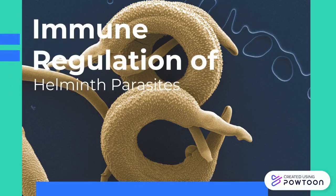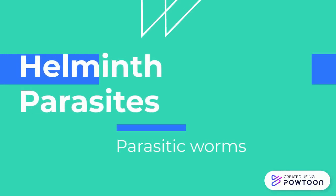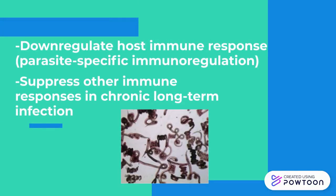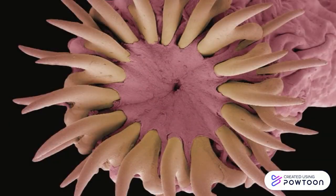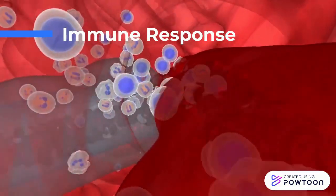How does your body combat helminth parasites? Helminths are parasitic worms that belong to a group of complex metazoans and come in many forms. They can suppress immune responses directed towards themselves and other bystander pathogens or antigens, as well as autoimmune and metabolic disorders in chronic infection. This makes these worms especially dangerous. The severity and chronicity of the infection determines the immune response, and the immune system will execute a complex series of actions to fight these parasites.